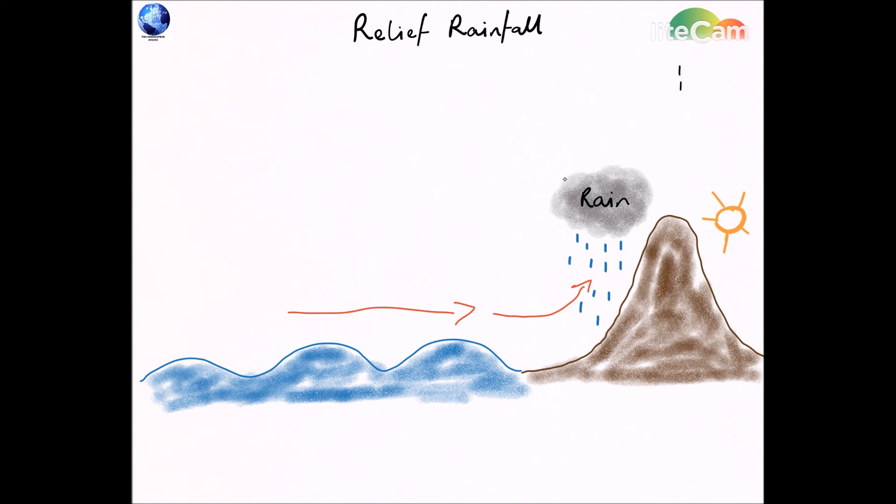Now you have to be very careful when you're drawing this diagram because you have two sides to the mountain. On the seaward side of the mountain, where the air is rising and cooling, that is where you get the rainfall.